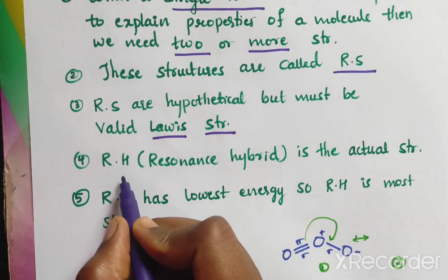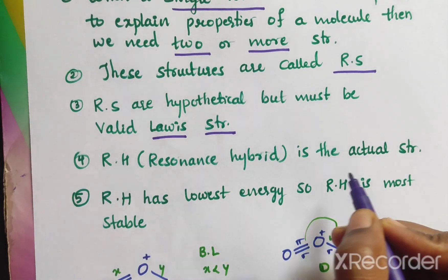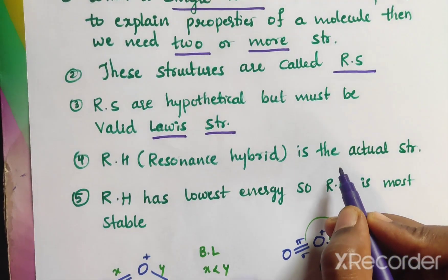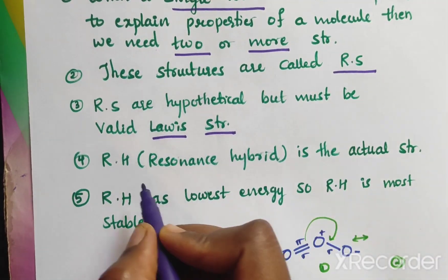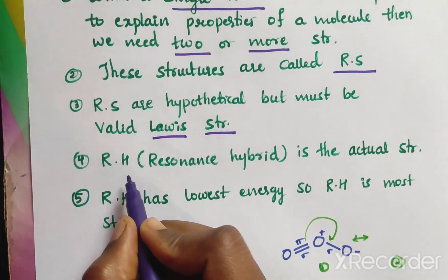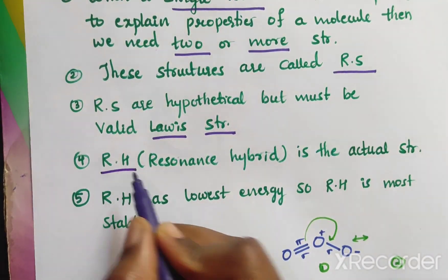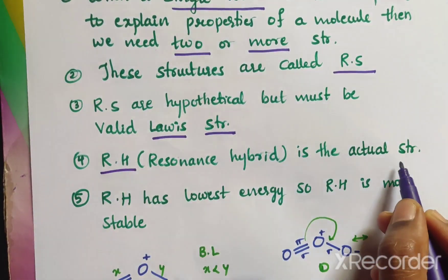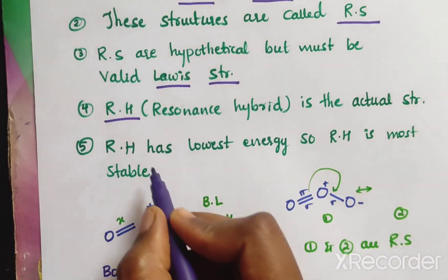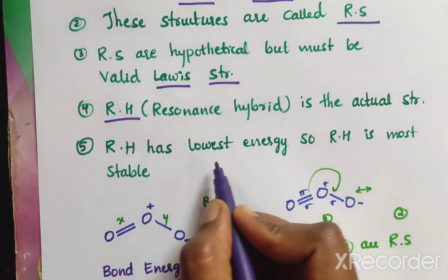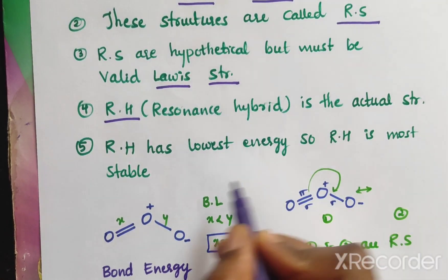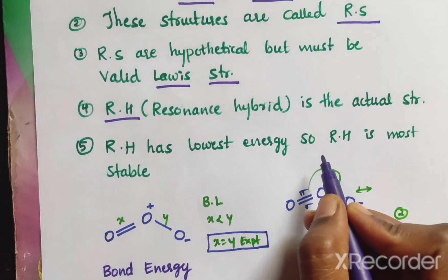The resonance hybrid is the actual structure out of those resonance structures. Resonance hybrid has the lowest energy, so the resonance hybrid is the most stable.